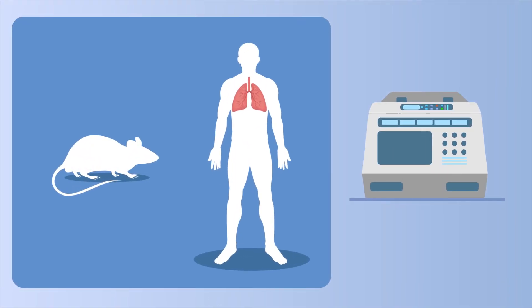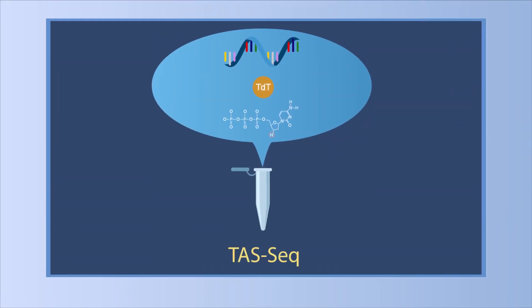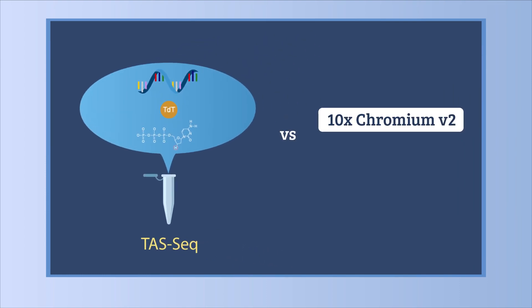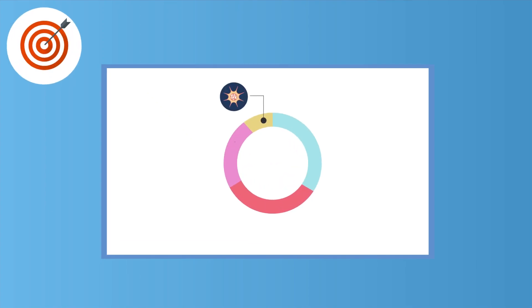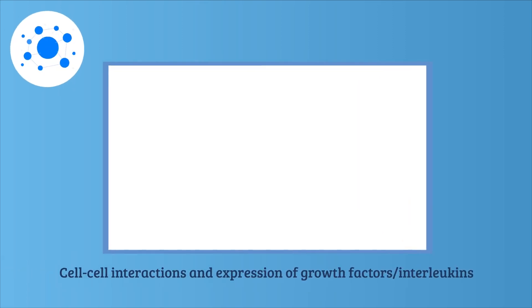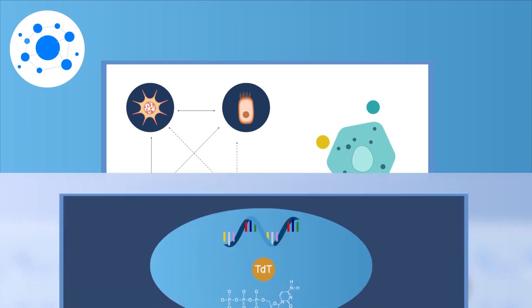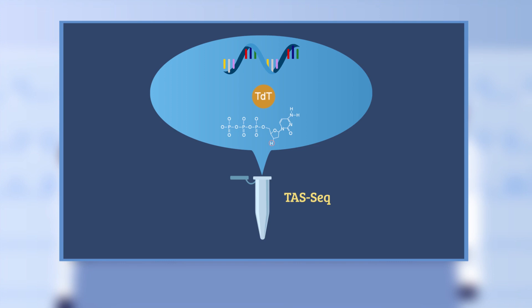The research team verified the efficiency of TAS-seq using murine and human lung samples. They found that compared to existing widely accepted scRNA-seq technologies like 10X Chromium V2 and SmartSeq 2, TAS-seq provided more accurate cell composition data, more sensitive gene detection, and more robust detection of cell-cell interactions and expression of growth factors and interleukins.